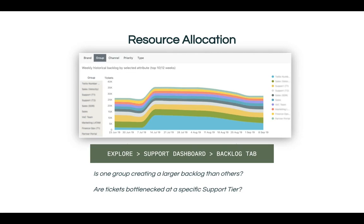Another query that you'll be presented with allows you to take a look at backlog by a specific attribute. This screenshot is looking at backlog by agent group. You can ask yourself two questions here: Is one group creating a larger backlog than others? Or if you use a tiered support system, are tickets getting stuck at one tier versus others? This will help you allocate your resources properly and determine if one group is potentially using an inefficient process versus others.